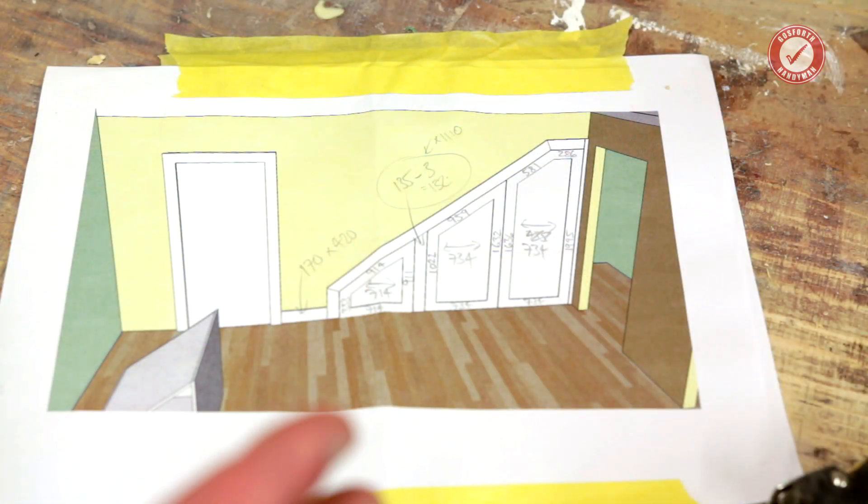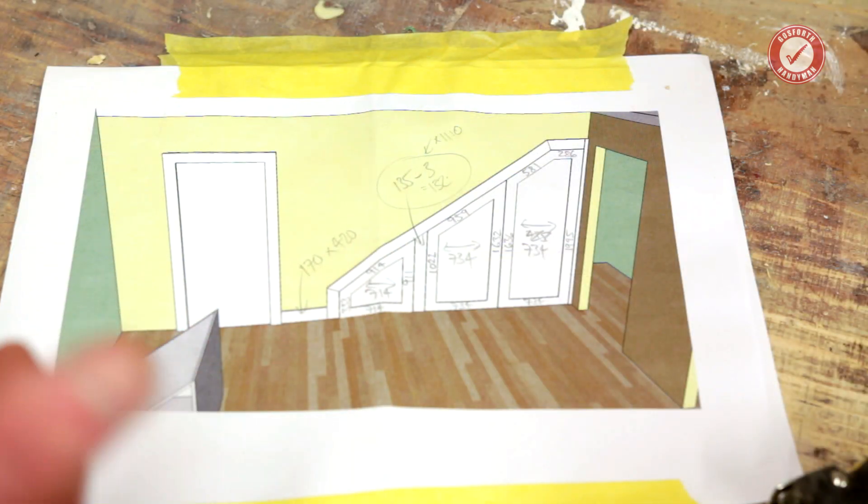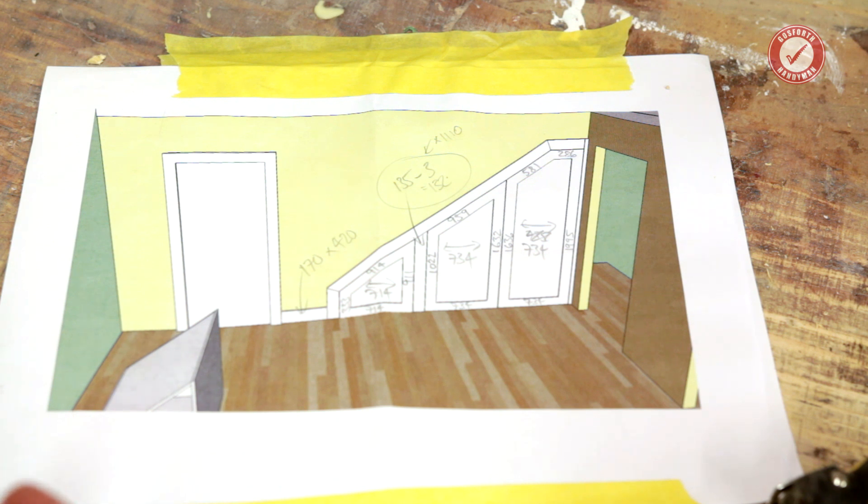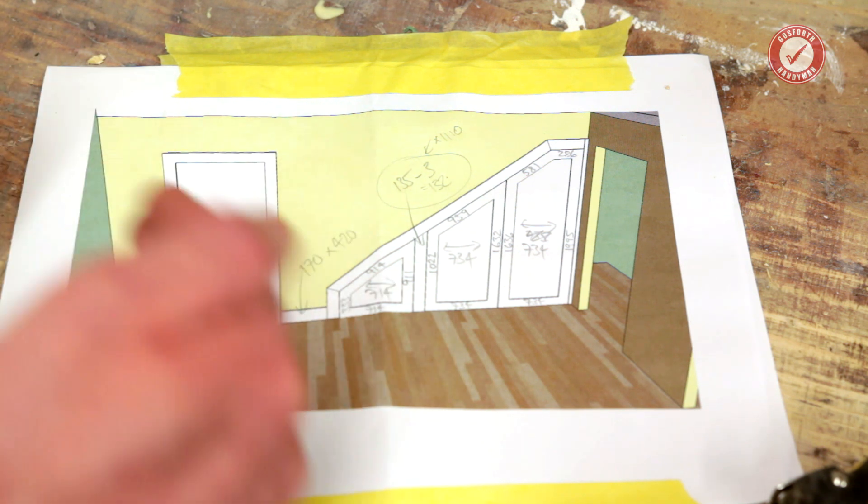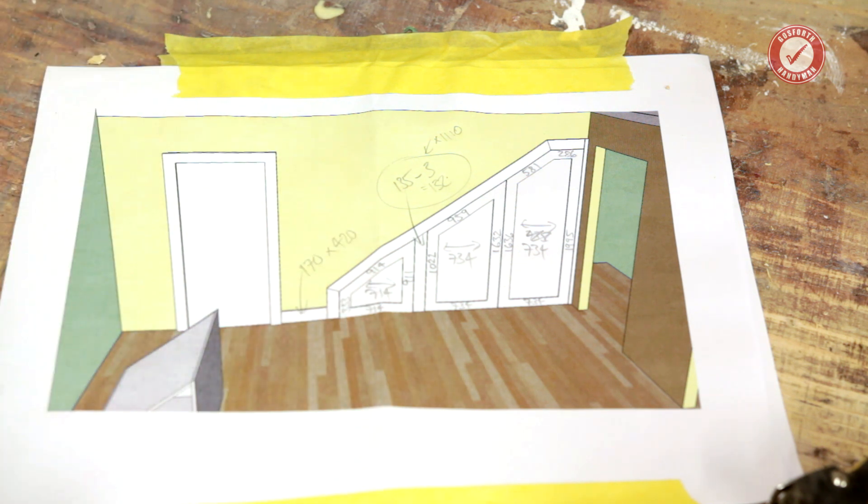This particular method of bisecting an angle is really handy for all sorts of things. If you're doing skirting boards around a bay window or something like that and you've got all the skirtings at funny angles, you need to divide your angles up.